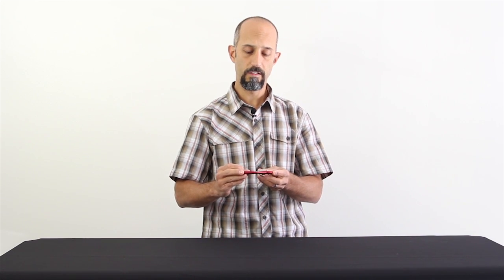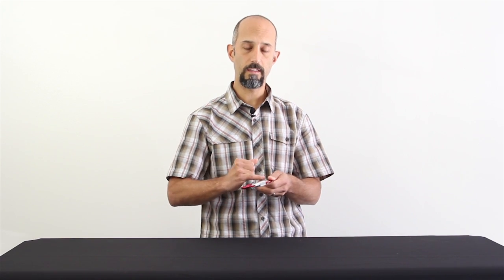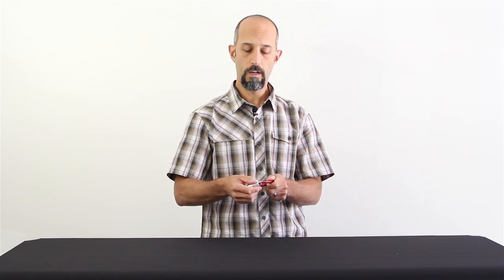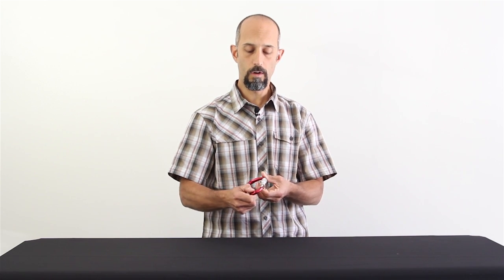What Omega Pacific has done with this particular carabiner is instead of having a spring inside the gate that allows the gate to open and close and spring back into place, they've incorporated that spring into the orientation keeper.